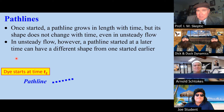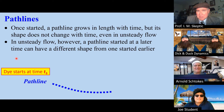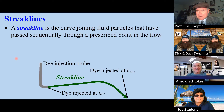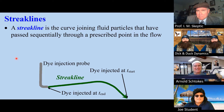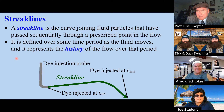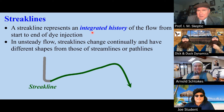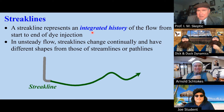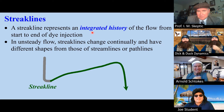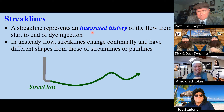In an unsteady flow, however, a pathline started at a different time can have a different shape from one started earlier. A streakline is the curve joining fluid particles that have passed sequentially through a prescribed point in the flow. It is defined over some time period as the fluid moves. A streakline represents the integrated history of the flow from the start to the end of dye injection. In an unsteady flow, streaklines change continually and are different from streamlines and pathlines.